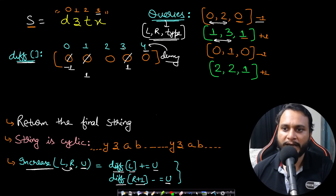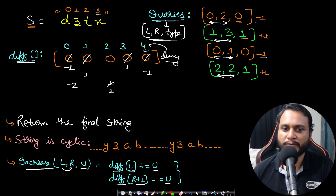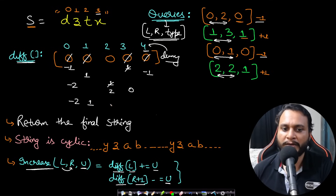Processing the queries: query [0,2] decrement — diff[0] -= 1, diff[3] += 1. Query [1,3] increment — diff[1] += 1, diff[4] -= 1. Query [0,1] decrement — diff[0] becomes -2, diff[2] += 1, making it 1. Query [2,2] increment — diff[2] becomes 2, diff[3] -= 1, making it 0. The final difference array is: [-2, 1, 2, 0, -1].